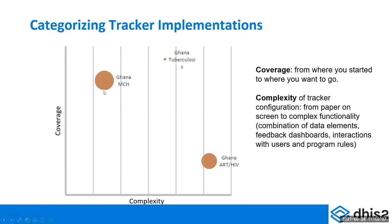The higher you go in coverage, the most likely — for example, this Ghana NCH program has very high coverage but very low complexity, and that usually is what happens. This also has high coverage but has actually been able to achieve high complexity. I know that the TB program in Ghana has required a lot of work to achieve that. Then you have an example of high complexity but low coverage, which is Ghana's ART HIV tracker program. So the complexity of the tracker configuration can go from people on screen to very complex functionality, like feedback, passwords, and interactions with users and program rules.